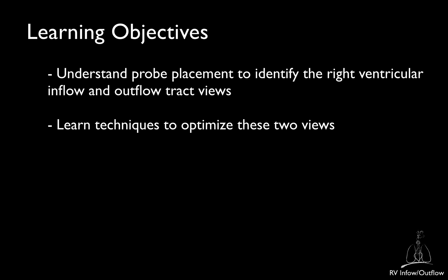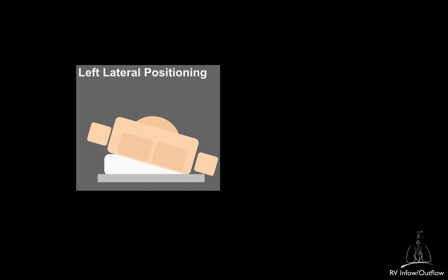Even in the intensive care unit, you should try to position the patient in left lateral decubitus unless there is a contraindication such as spine precautions, or when inappropriate in case of severe cardiovascular or respiratory instability. The goal is to shift the heart laterally. Often positioning a wedge or a pillow underneath the right side is necessary to support this position.